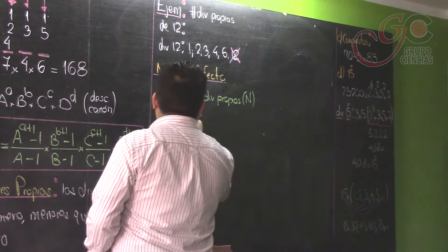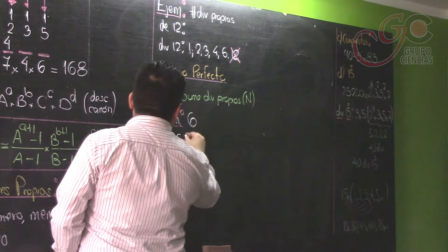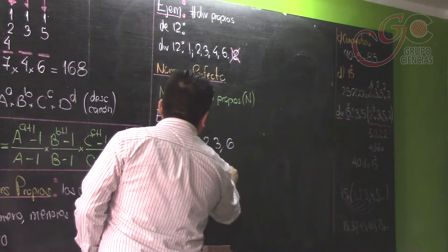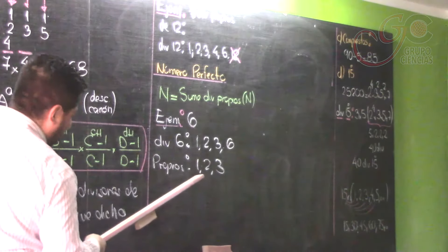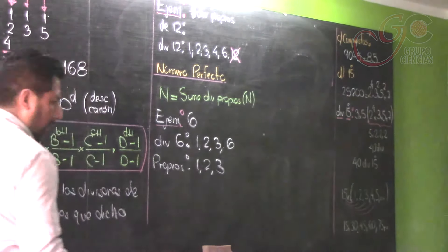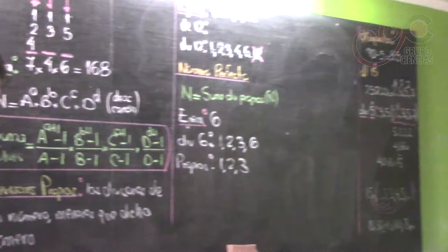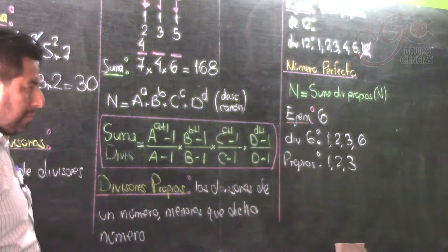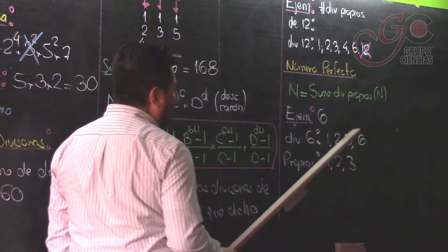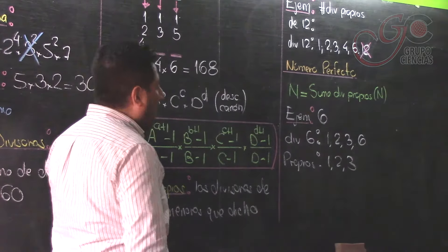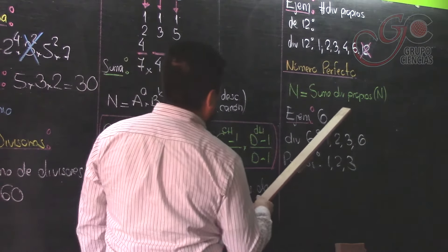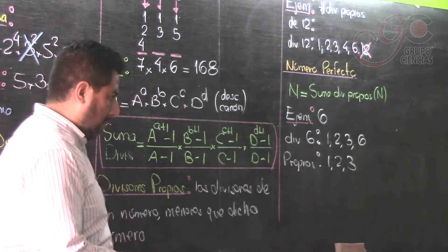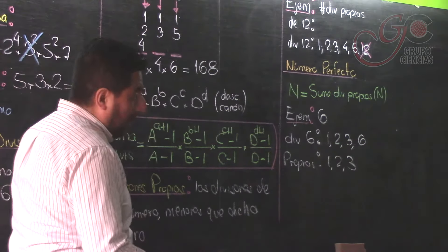Por ejemplo, el 6: ¿el 6 será perfecto? Los divisores de 6 son 1, 2, 3, 6. Los divisores propios son 1, 2 y 3. Debe verificarse que la suma de esos divisores propios dé el mismo número. ¿Cuánto es 1+2+3? 6. El 6 es perfecto por eso. Un número abundante es aquel cuya suma de divisores propios sea mayor que el número. Un número es defectuoso cuando la suma de divisores propios sea menor que el número. O sea, dependiendo de la suma de divisores propios, serán perfectos, defectuosos o abundantes.